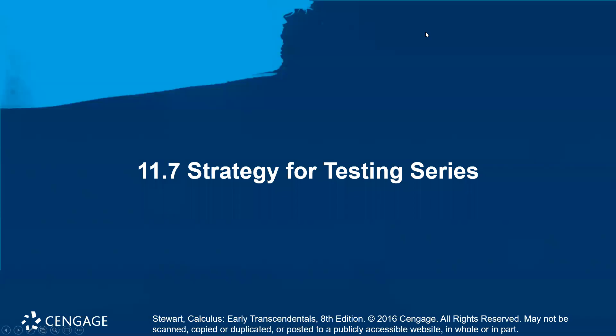This is section 11.7 strategy for testing series. This is one of those summary type sections where there's nothing new but instead it discusses all the different tests we've learned in the last few sections and how you can decide which tests might be best for you when you're trying to determine if a series converges or diverges. So it's just some guidelines.